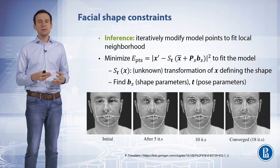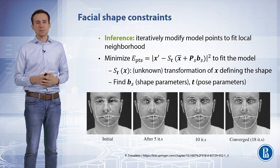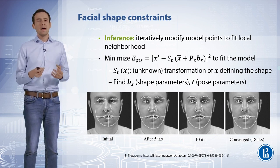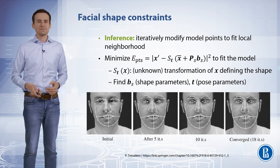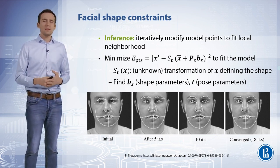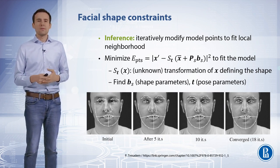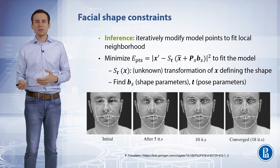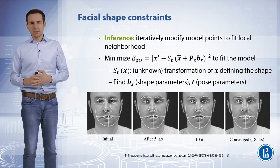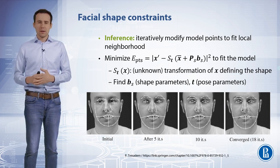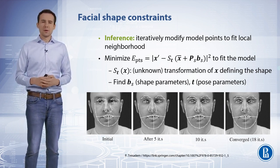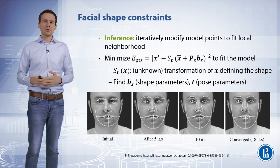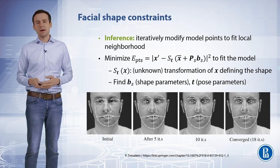To align the model to a newly observed set of image points x prime, we minimize the sum of squared distances between corresponding model and image points. If the allowed global transformation s sub t is more complex than a simple translation, this is a non-linear equation with no analytic solution. A good approximation can be found rapidly, however, by using a two-stage iterative approach, where each step solves a linear equation for common choices of transformation such as similarity or affine.